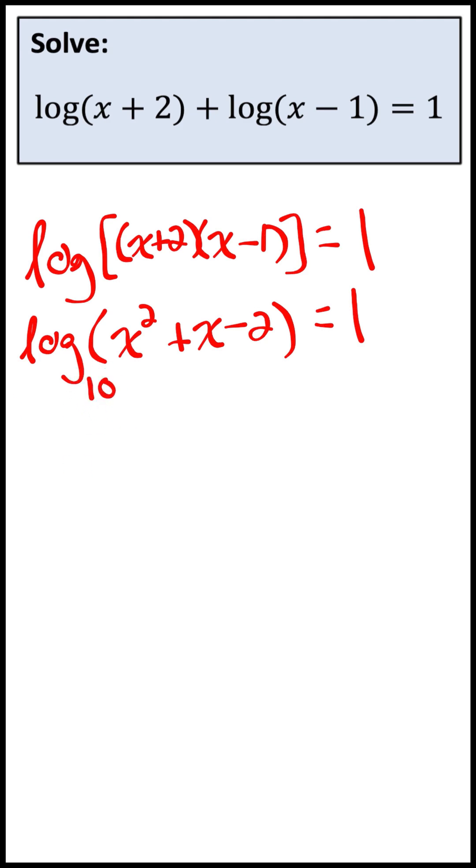Remember the base of that log, if we don't see it, it's the common logarithm. So the base is 10. So this expression means that 10 to the power of one equals the argument x squared plus x minus two.